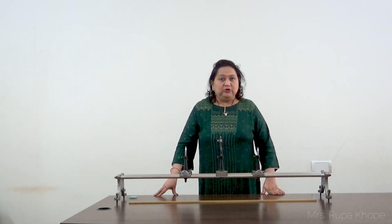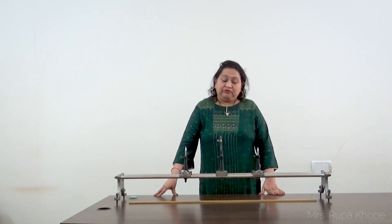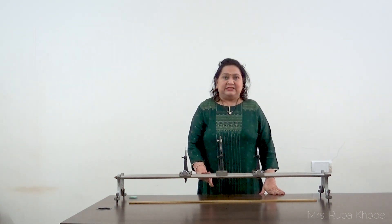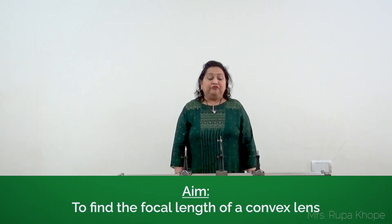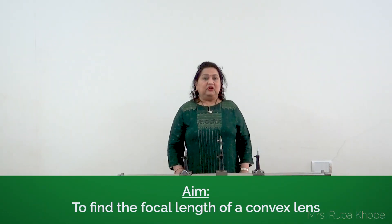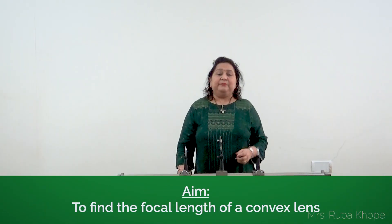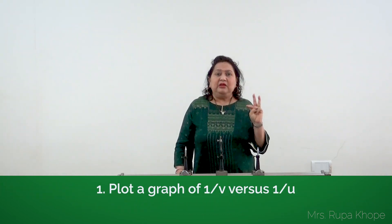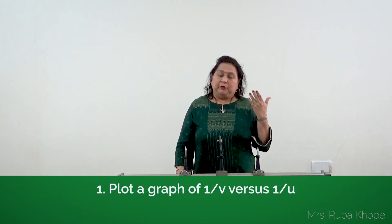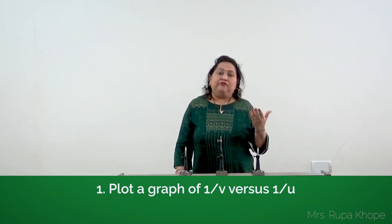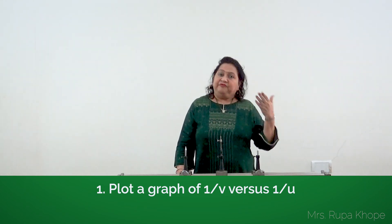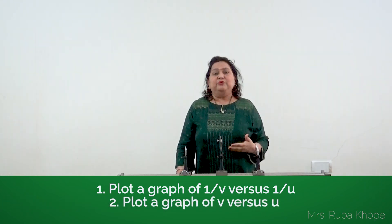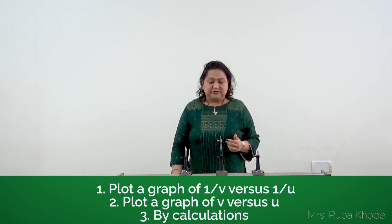We need to find the focal length of this convex lens. The aim of the experiment is to find the focal length of this lens by three methods: first, plot the graph of 1/v versus 1/u; then v versus u; and then by calculations.